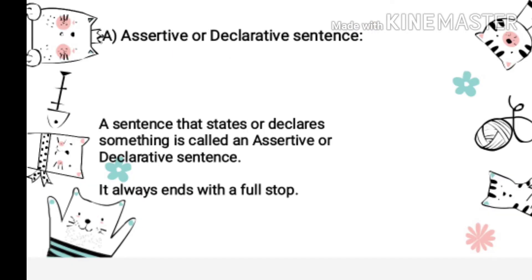Assertive or declarative sentence — a sentence that states or declares something is called an assertive or declarative sentence. It always ends with a full stop.